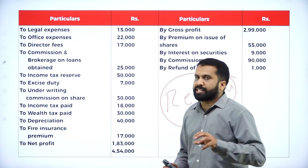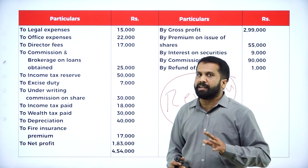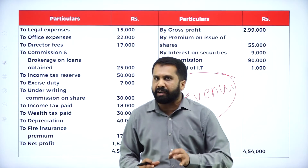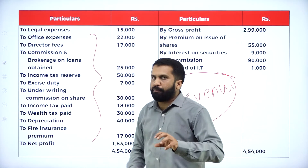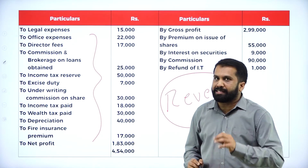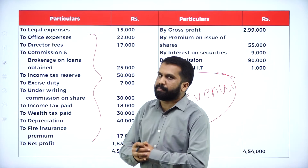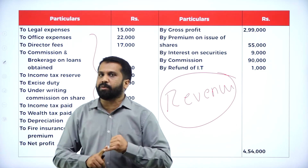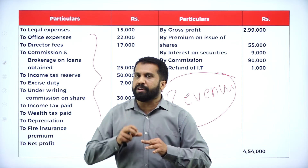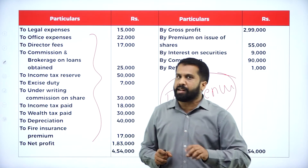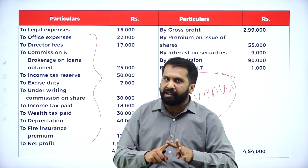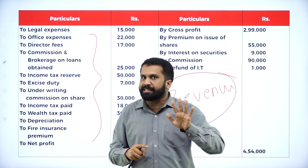Whatever we have on the debit side, those are expenses. Whatever we have on the credit side, those are incomes. On the debit side, items which are related to business we do not add back. We have a few items called disallowed items. What do you mean by disallowed item? Any tax paid — disallowed item. Any reserves — disallowed item. Any provisions — disallowed item. Depreciation — disallowed item. Any provisions, any reserves, any taxes paid, any personal expenses made, any depreciation — all come under disallowed items.